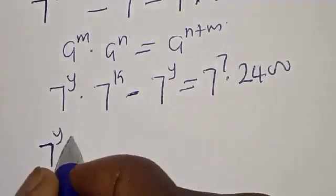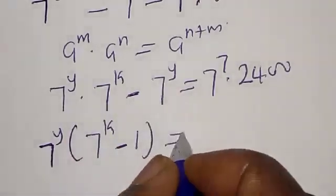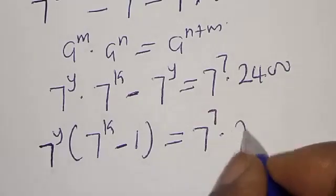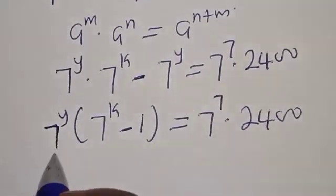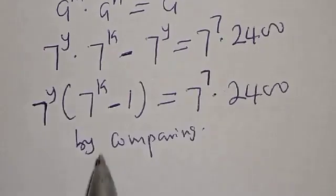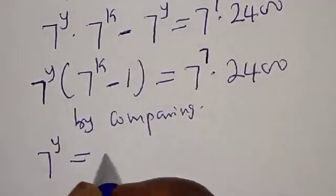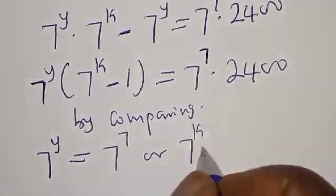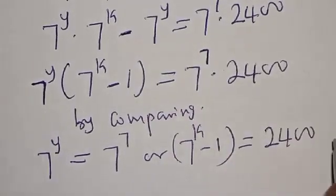Factoring out 7 raised to power y, which is common to both terms, we get: 7 raised to power y into 7 raised to power k minus 1, is equal to 7 raised to power 7 multiplied by 2400. By comparing both sides, there are two cases: 7 raised to power y equals 7 raised to power 7, or 7 raised to power k minus 1 equals 2400.